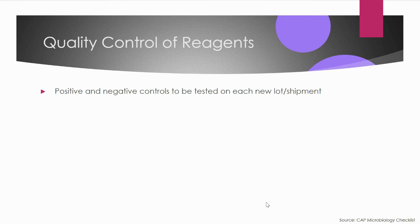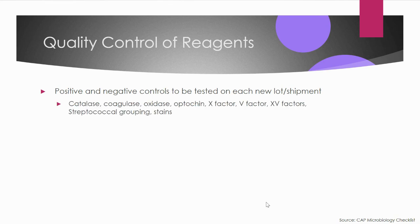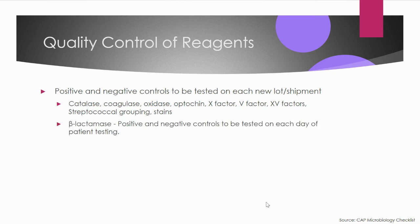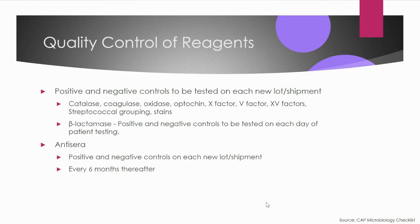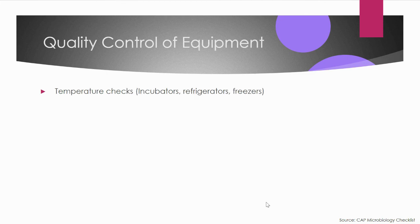For reagents, positive and negative controls are required for each new lot and shipment for catalase, coagulase, oxidase, optochin, X and V factors, streptococcal grouping antigens, and strains. Beta-lactamase requires positive and negative QC on each day of patient testing. For antisera — such as those for Salmonella and Shigella — positive and negative QC must be run upon arrival as well as every six months thereafter.